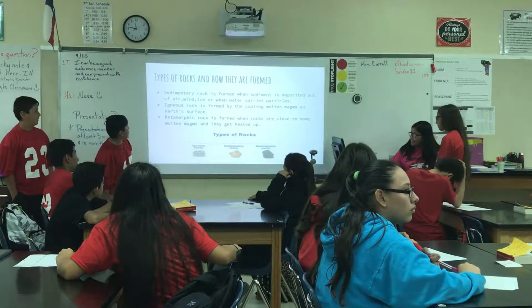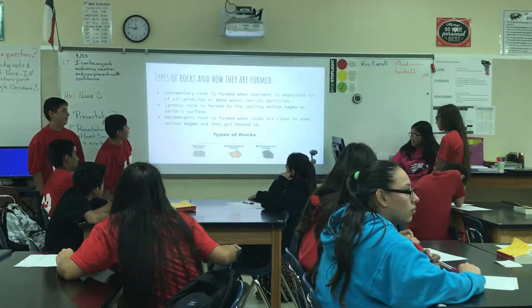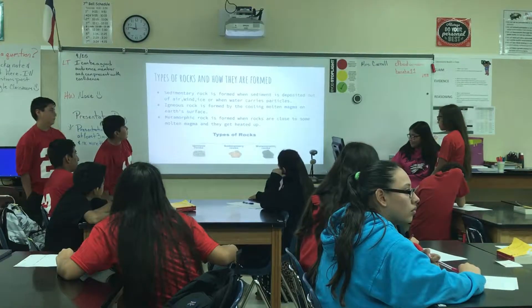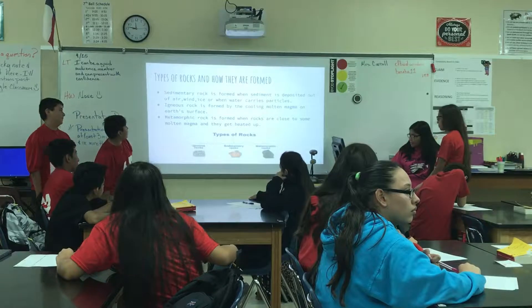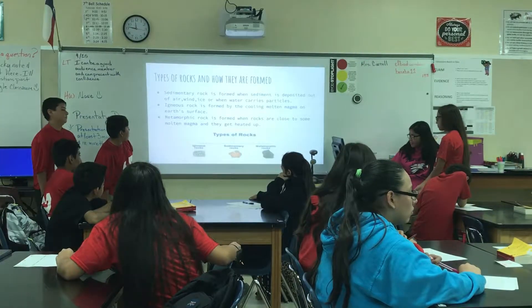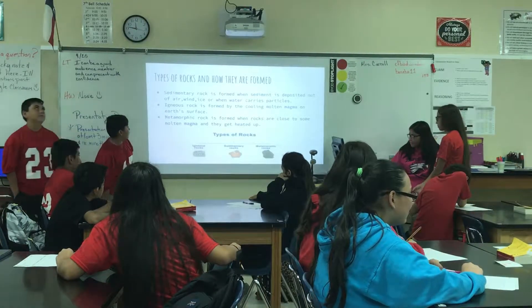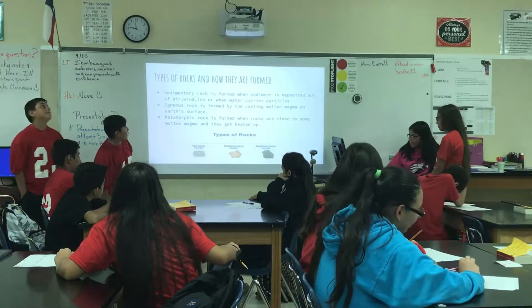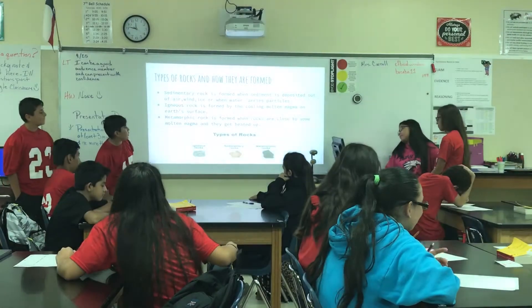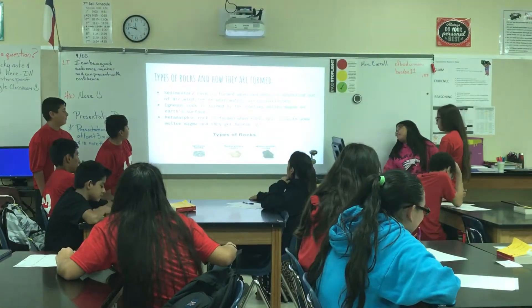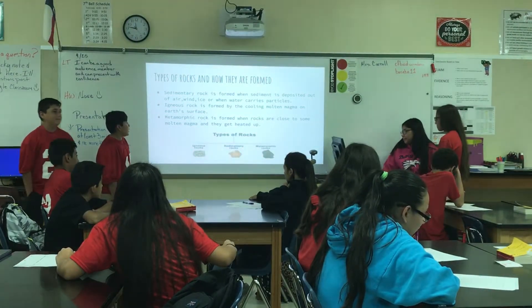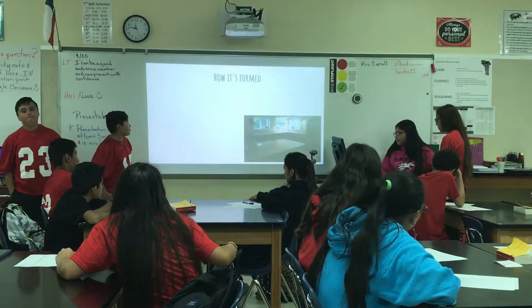Igneous rock is formed by pooling molten material on the earth's surface. The molten rock is formed when rocks are close to some molten material and they get heated up.